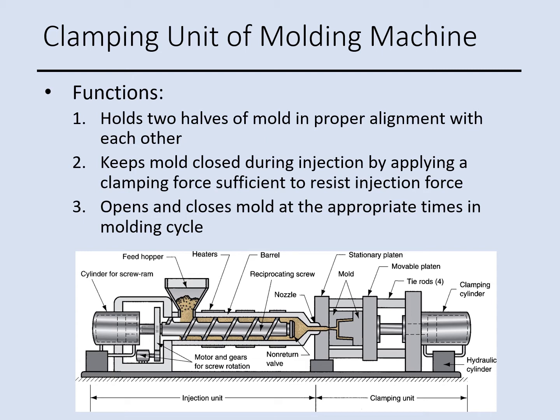The clamping unit holds the two halves of the mold in proper alignment. When the mold is closed, material is delivered into the mold and the plastic part solidifies. Then the mold opens and the part is ejected.